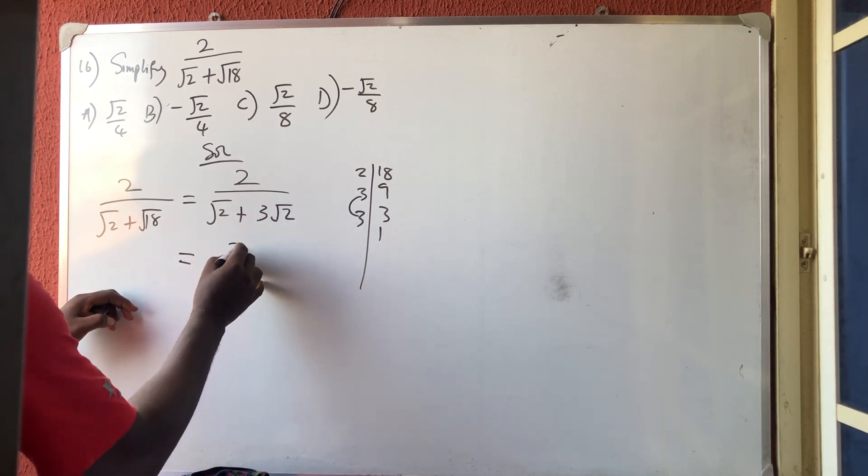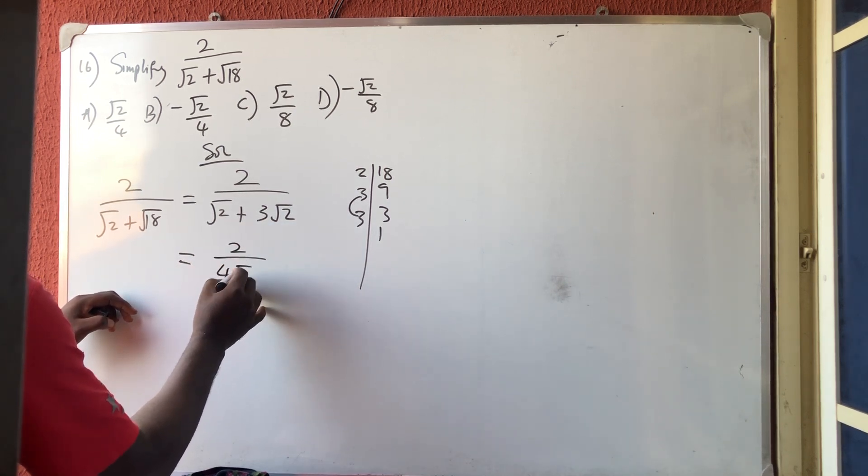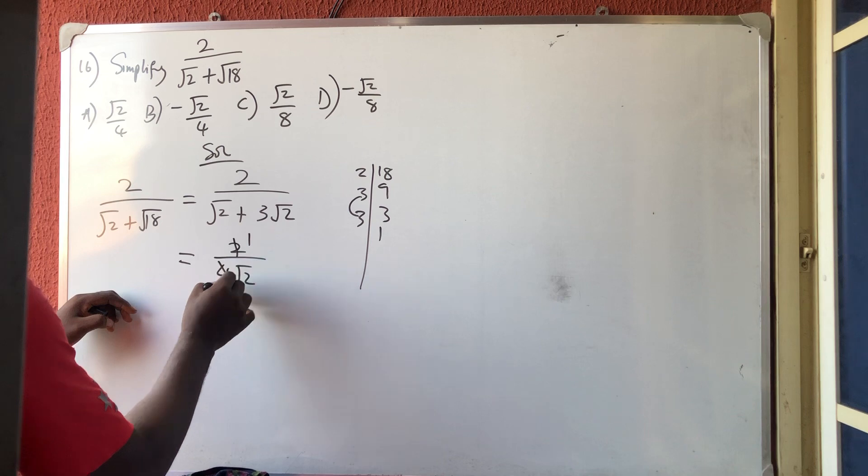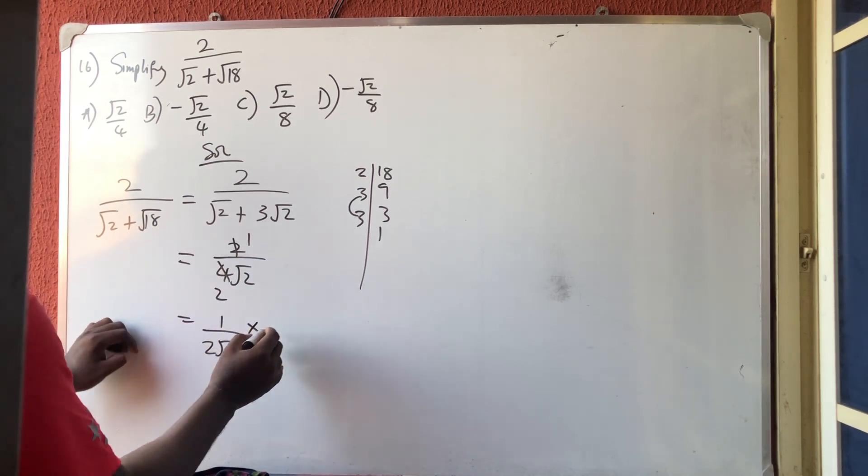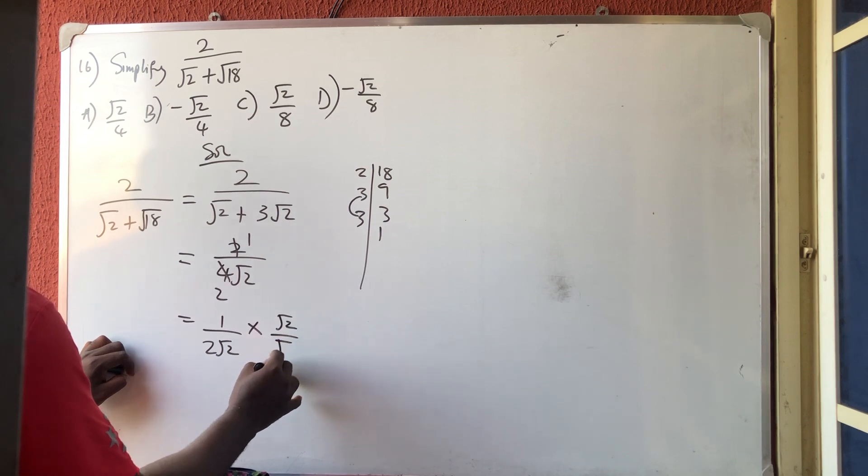Now 1 plus 3 will give me 4. So I have 2 over 4 root 2. Now 2 divided by 2, I'm left with 1 over 2 root 2. Then rationalize: times root 2 over root 2.